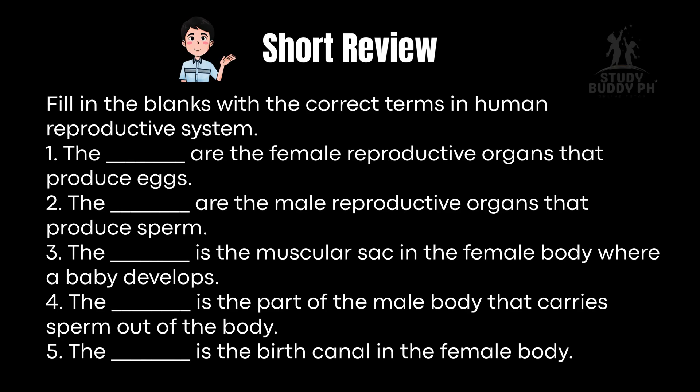Let's warm up. Fill in the blanks with the correct terms in the human reproductive system. These organs work together so humans can reproduce by giving birth to live young, just like other mammals.